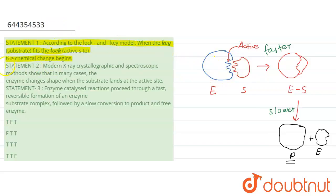And the second statement is: modern X-ray crystallographic and spectroscopic methods show that in many cases the enzyme changes the shape when the substrate lands at the active site. Yes, there is conformation change in between, so that's why there is a change in the shape of the enzyme. Yes, this statement is also right.